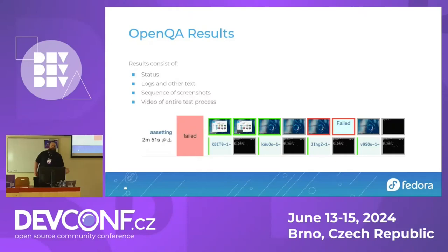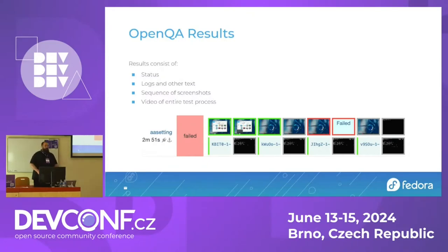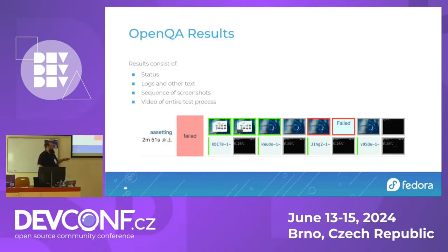When I talk about results, the system gives you your obvious status: did it pass, did it fail, did it crash? There's text output that comes from the system, but the stuff I'm more interested in is the visual parts. There's a sequence of screenshots every time it does one of those comparisons — asking, can you find this little image in the big image? It takes a screenshot and saves it, so you end up with a sequence of screenshots from beginning all the way through to the end.